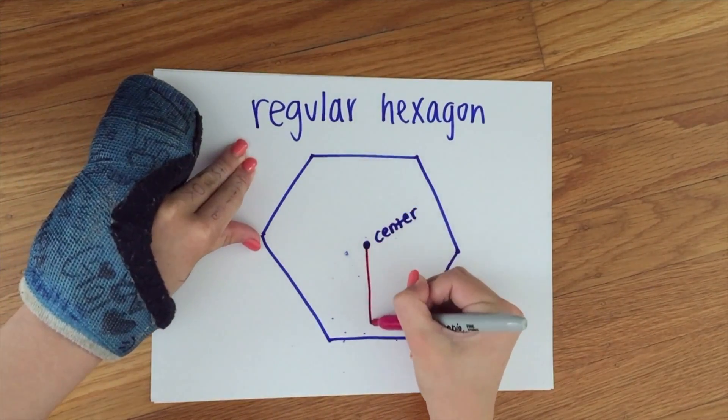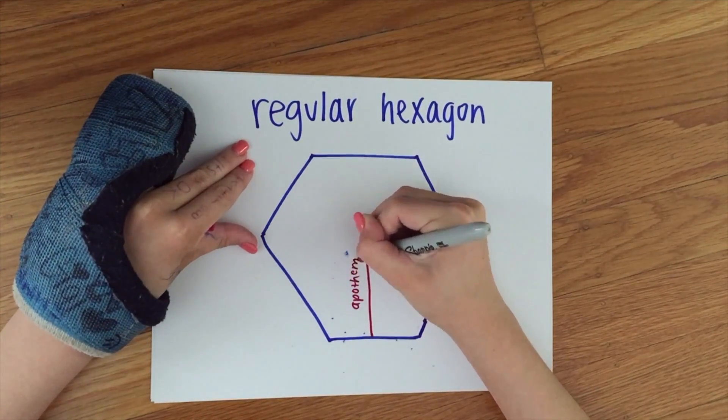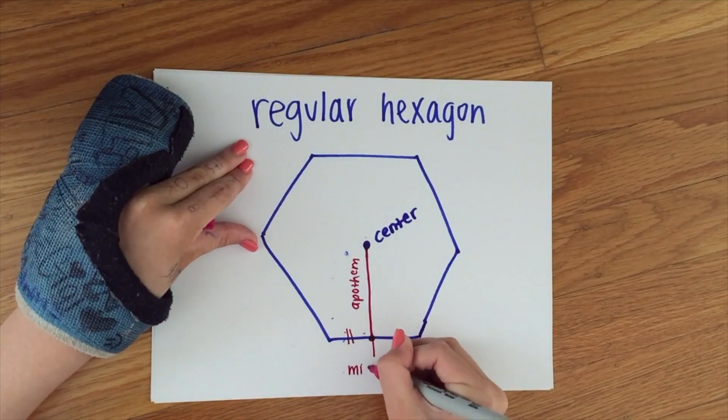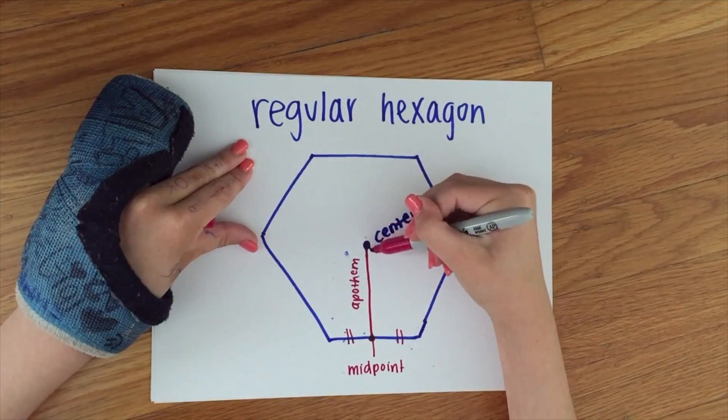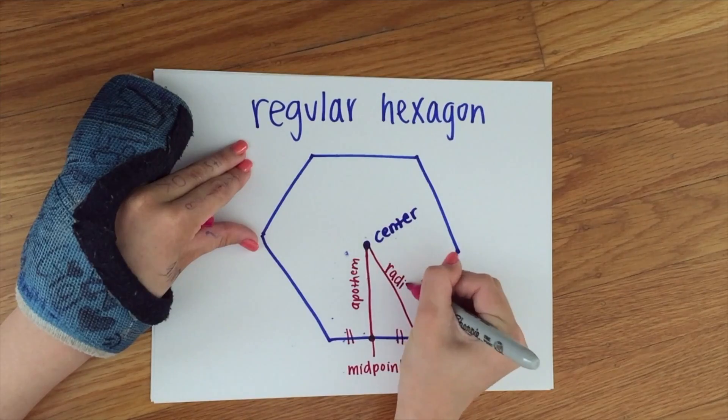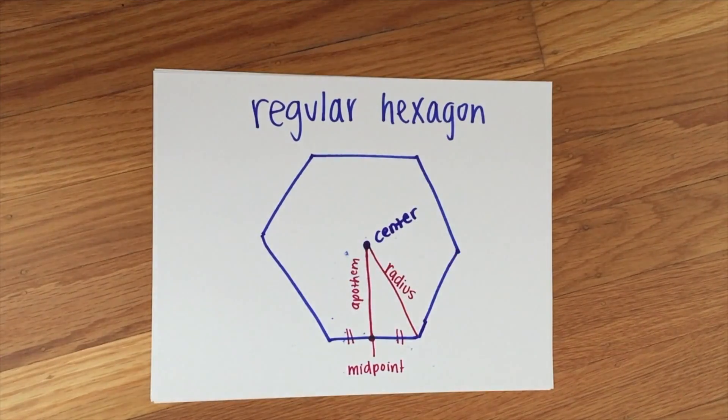The segment joining the center to the midpoint of a side is the apothem. The segment joining the center to any vertex is called the radius.